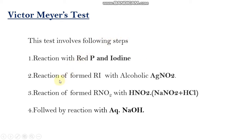In the second step, the alkyl iodide formed in the first step is reacted with alcoholic silver nitrite, AgNO₂. This results in the formation of a nitroalkane. In the third step, the formed nitroalkane is then reacted with nitrous acid, HNO₂. The resulting solution is then treated with aqueous alkali, that is aqueous NaOH or aqueous KOH.